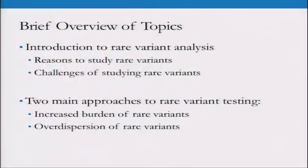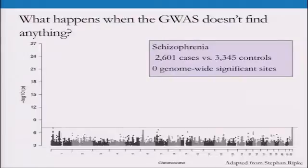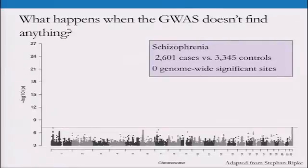Let's say you did a GWAS. What happens if you get something like this? This is real data. Schizophrenia back in 2009 had 2,600 cases and roughly 3,300 controls, and there are zero genome-wide significant loci. It was trimmed properly, it was QC'd properly — there's just nothing here. You could incorrectly assume that means common variation isn't playing a role, but given the fact that you only have 2,600 cases, this is what you see.